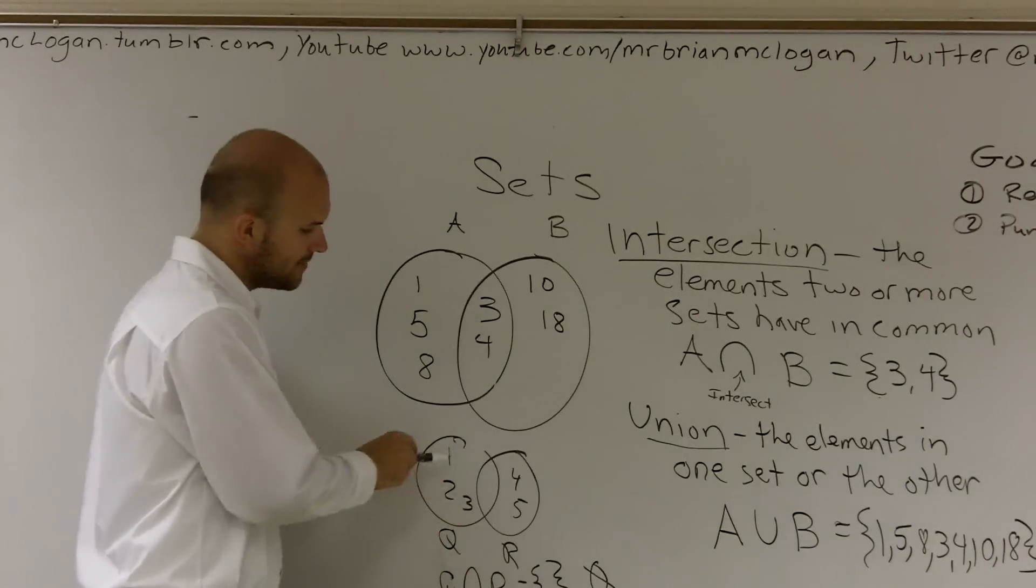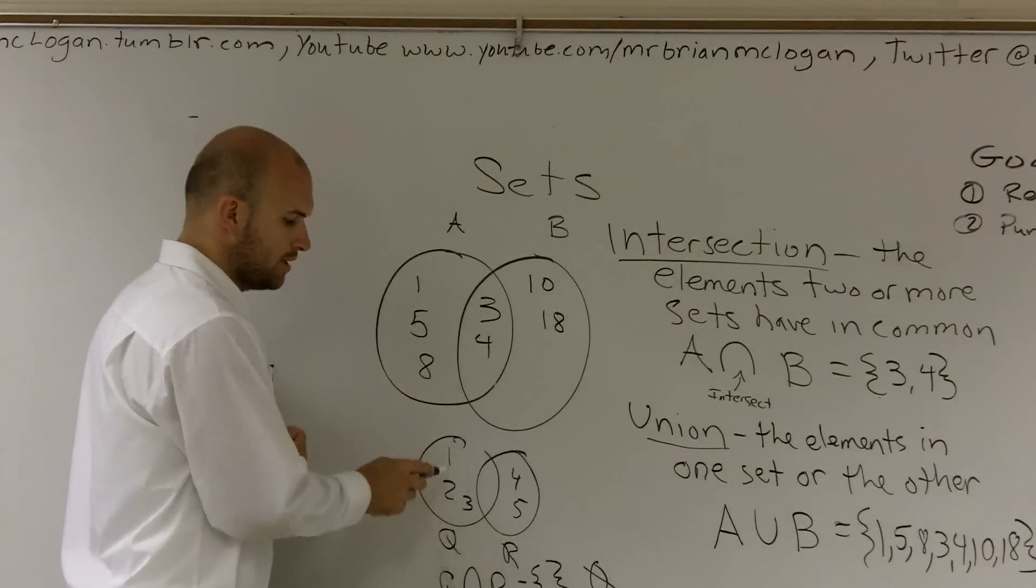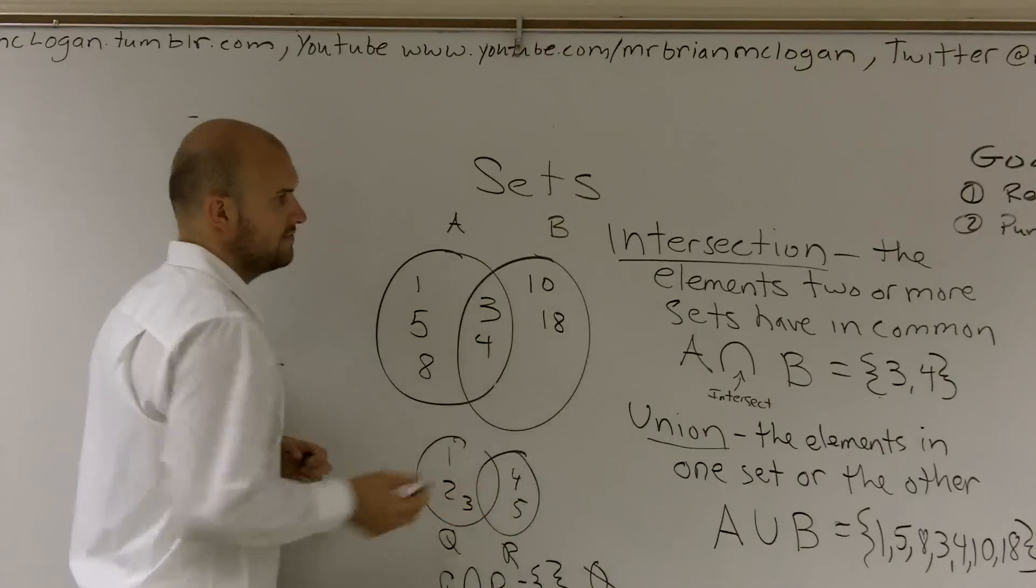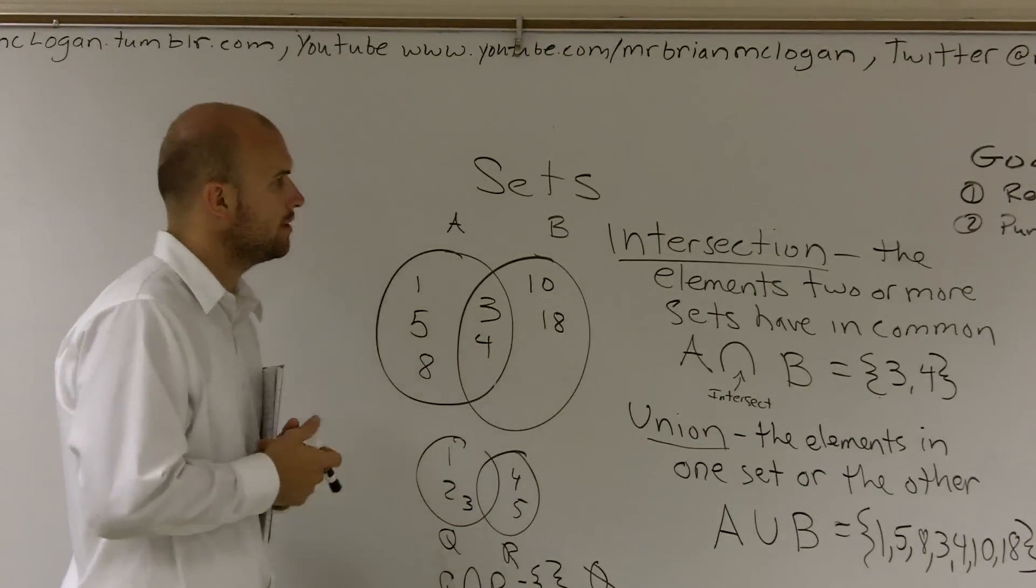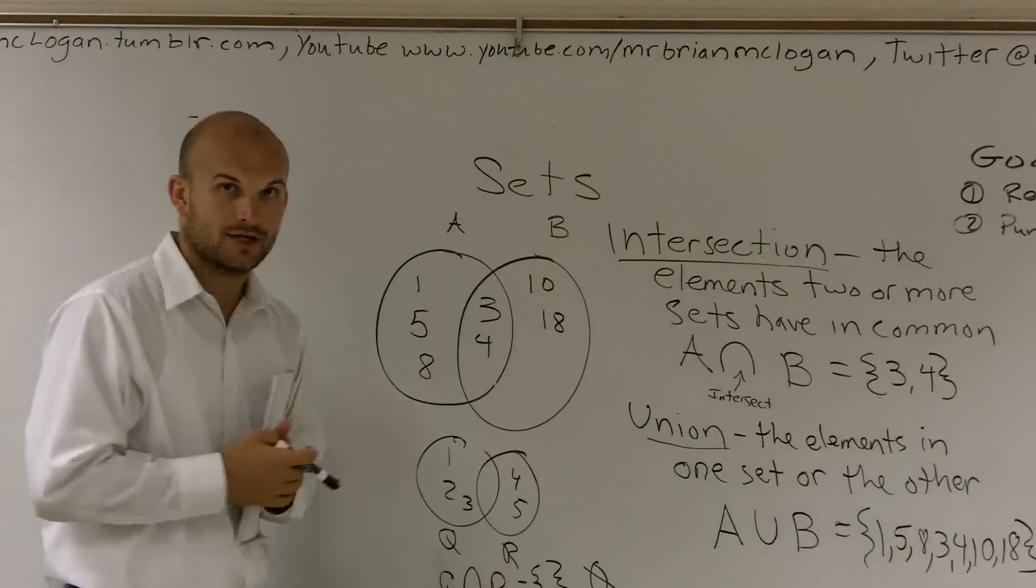And, however, the union of this set, I'm not going to write it down, but the union of this set would be one, two, three, four, and five. So, that is your second portion, a second overview of sets, intersection and union.